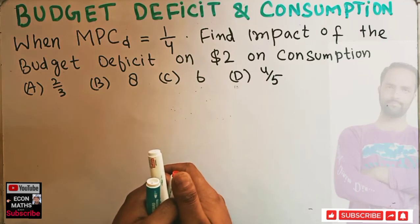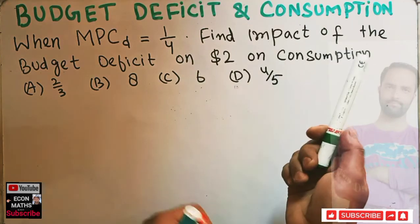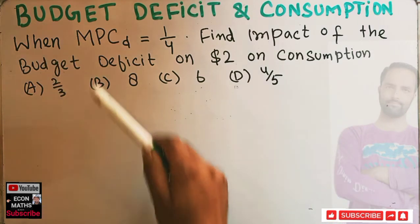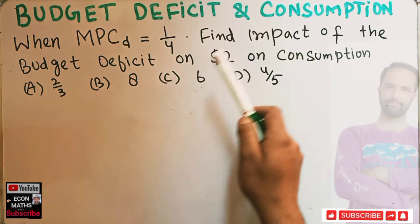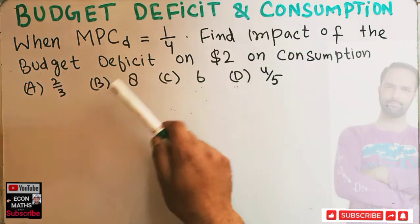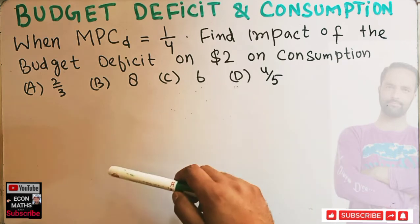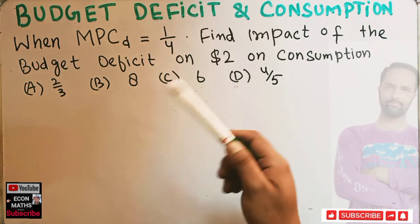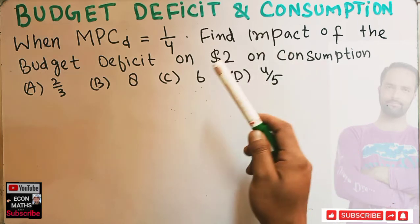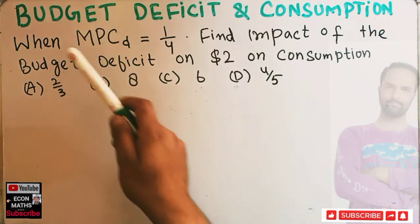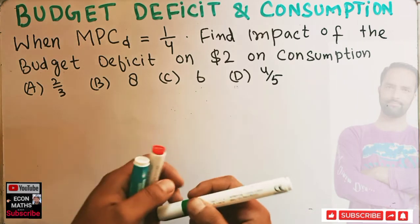Let us solve a problem on the impact of budget deficit on consumption. The question is: when the marginal propensity to consume out of disposable income is one upon four, find the impact of the budget deficit on two dollars on consumption. So we have to see what will be our budget deficit when consumption changes by two dollars and when our marginal propensity to consume out of disposable income is one upon four.